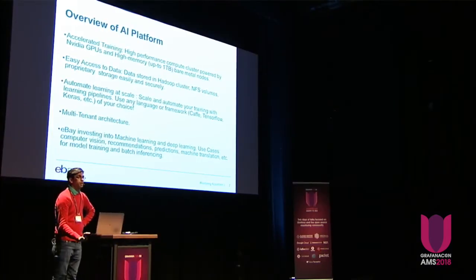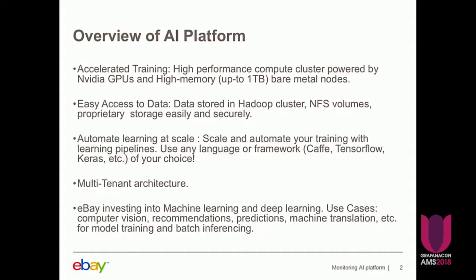When we came up with the AI platform, it gives a series of advantages to the entire deep learning community within eBay. First, it lets you do accelerated training. We actually provide them with a high-performance compute cluster which contains more than 100 bare metal nodes, each with one terabyte of memory. We also give them access to more than 100 nodes with GPU cards. So if you're doing deep learning or computer vision, you really need pretty aggressive hardware — and we provide that.